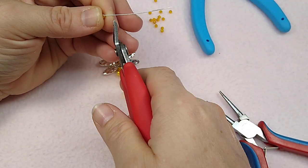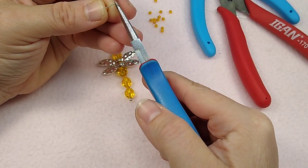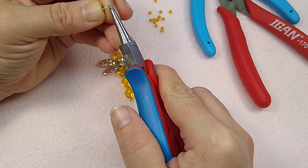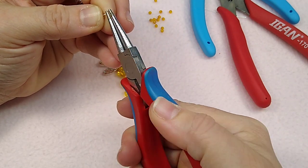Just like this. Teeniest, tiniest loop. And on these little teeny, tiny loops, I don't like to make them wrapped because I think it makes it too bulky. I want them to be tiny, tiny, tiny.